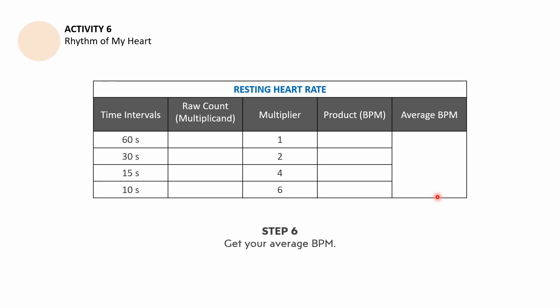Lastly, get your average BPM by dividing the sum of the products by 4. What you may be hearing in the background is a helicopter — it may be a distraction, but I hope you're still with me.